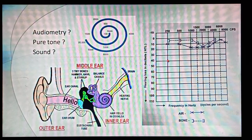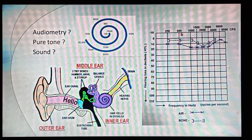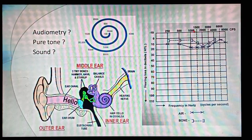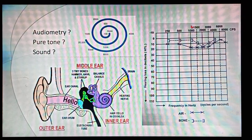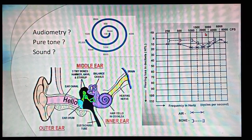Likewise, I can increase the loudness or intensity of this 250 Hz frequency sound. Similarly, I can also give a 500 Hz tone with varying intensity. The same can be repeated for 1000, 2000, 4000 Hz, and so on. Generally in our routine daily life, conversational sounds lie in between 500 to 2000 Hz — most of the routine sounds will be present in that range.